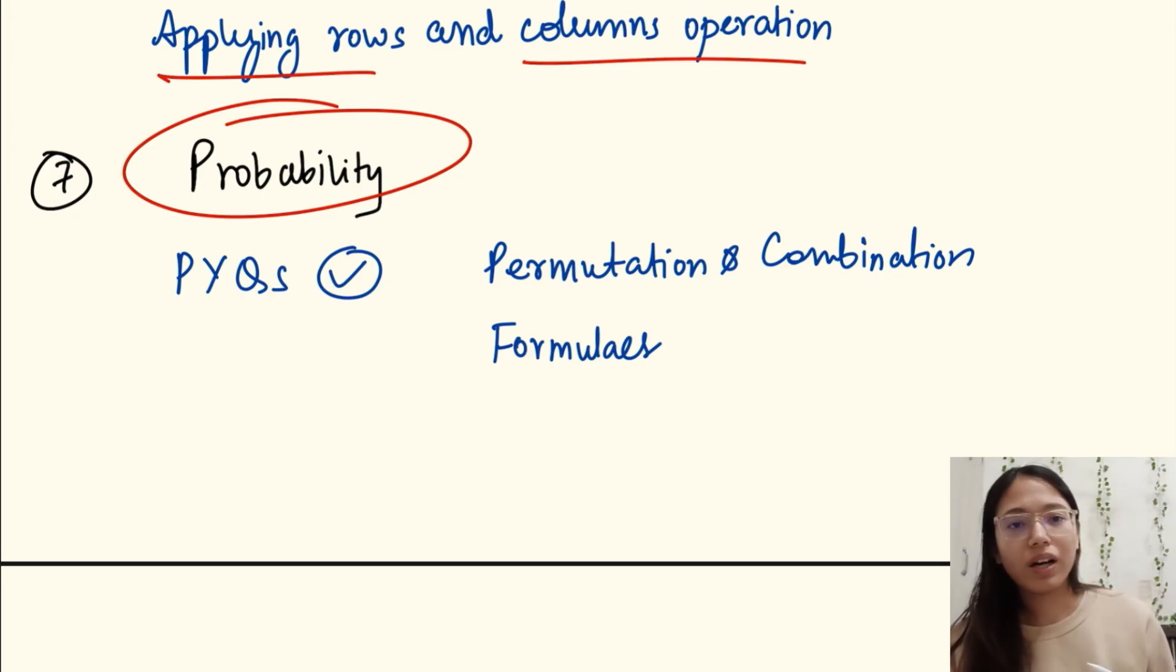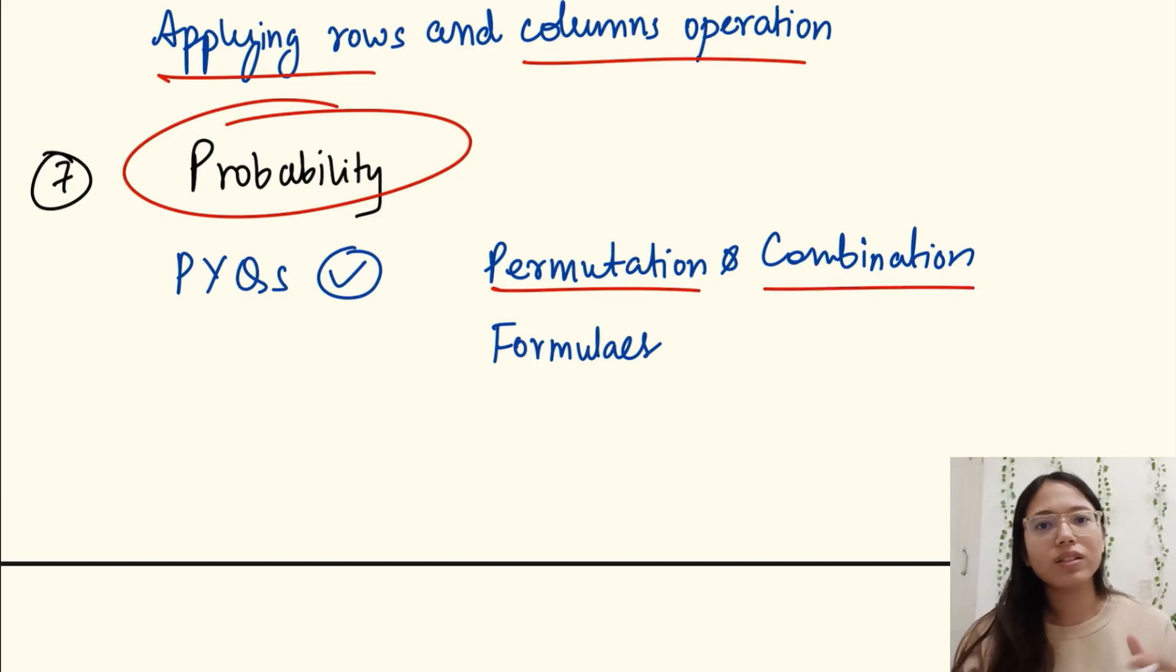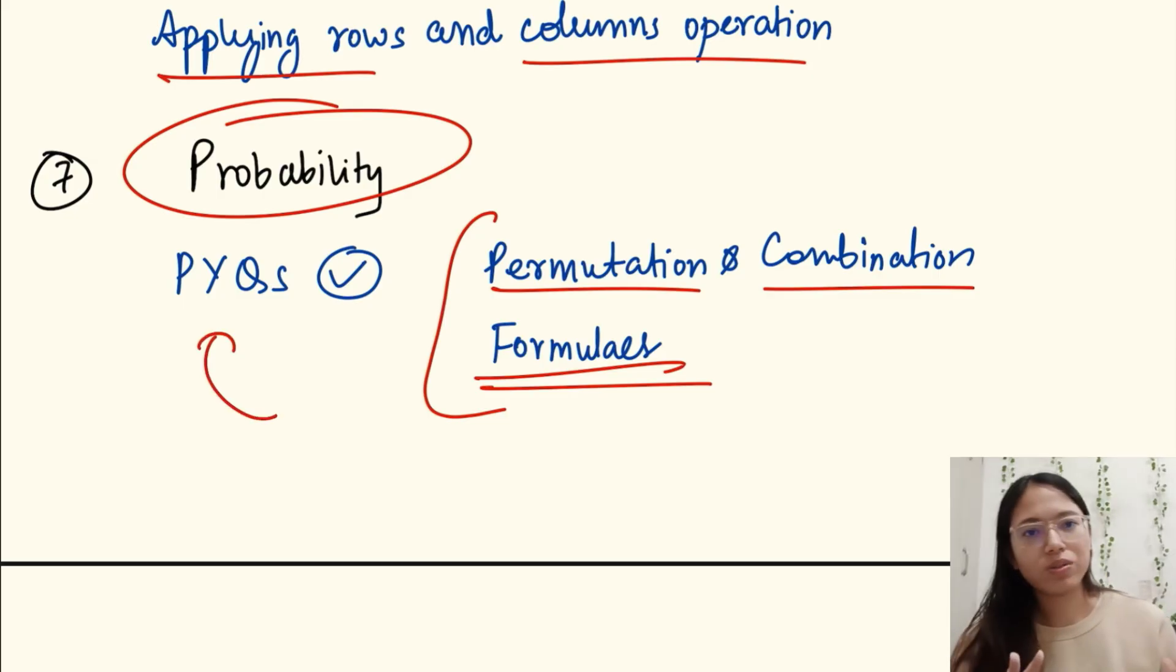Permutation and combination, you should be aware about how to choose. Like they'll be asking you these many balls are in this bag, so you have to transfer it. You have to brush up your basics, the formulas of probability. After you have completed it, directly go to the PYQs. The exercise questions are a little bit tough, you will not be able to solve it. So it's better to go with the PYQs.